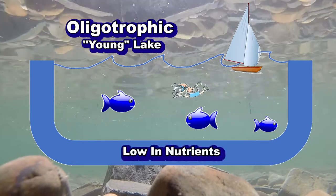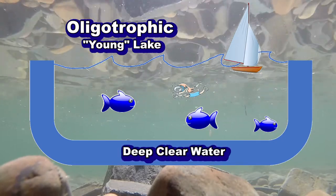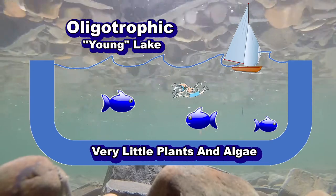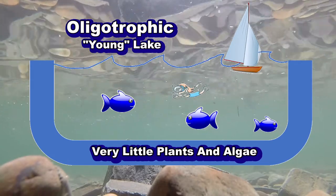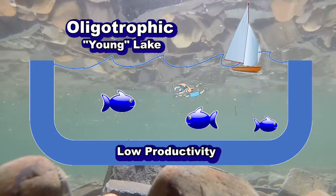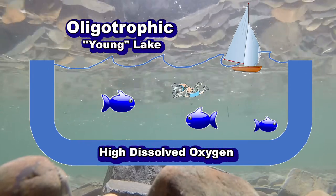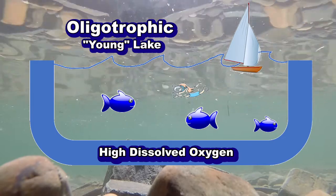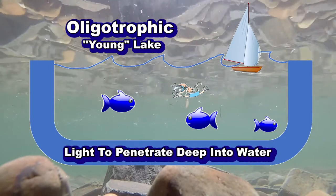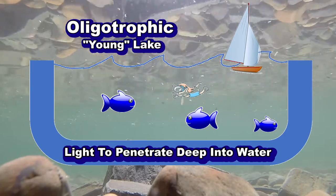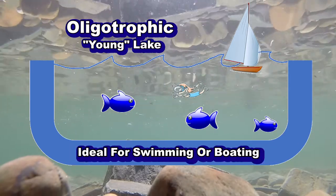Oligotrophic lakes, or lakes low in nutrients, are defined by deep, clear water, rocky and sandy bottoms, and very little plants and algae. There is generally low productivity and low nutrient levels. This results in high dissolved oxygen content. The clear water allows for light to penetrate deep into the water. These lakes are often considered pristine and are ideal for swimming or boating.